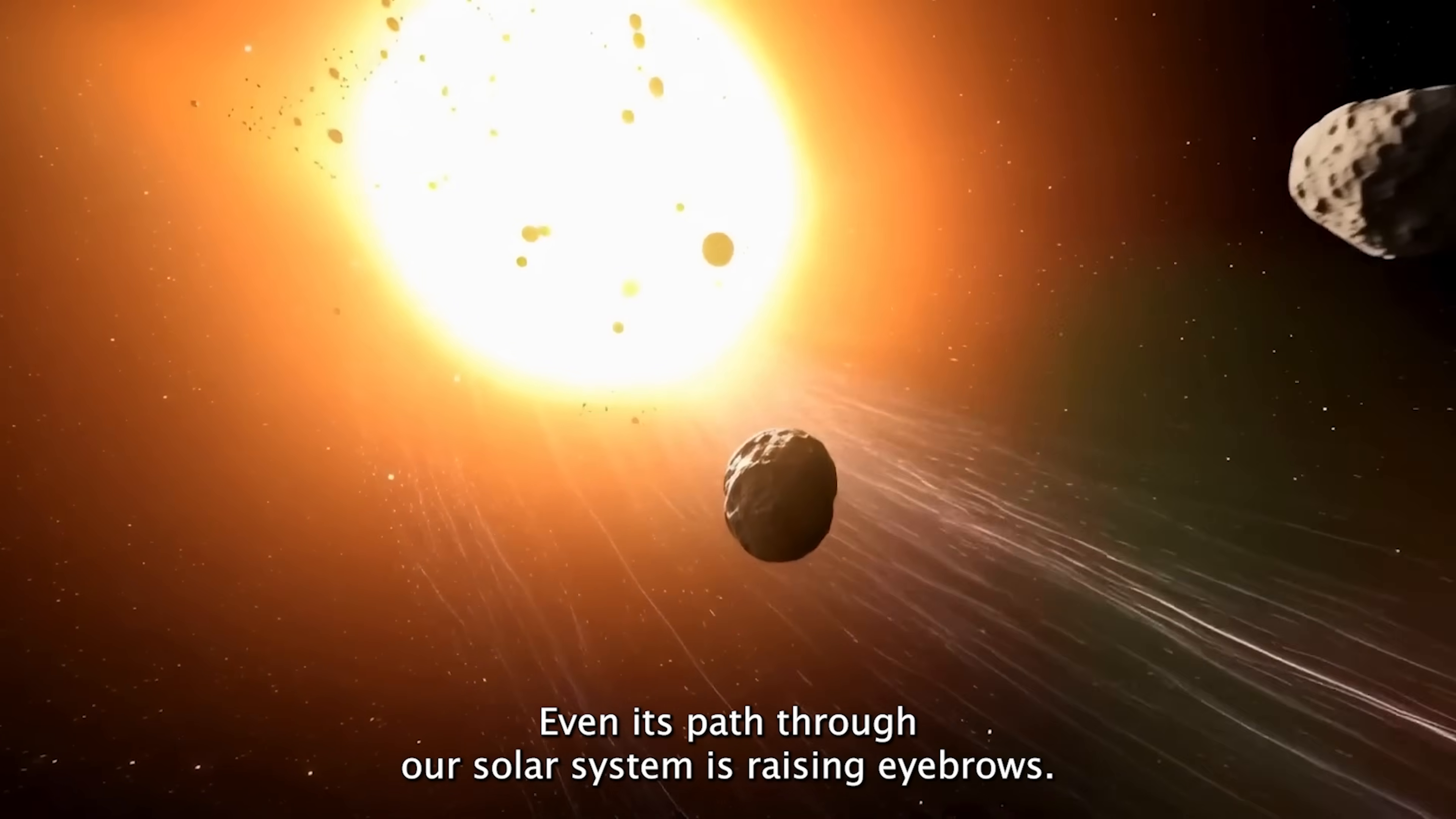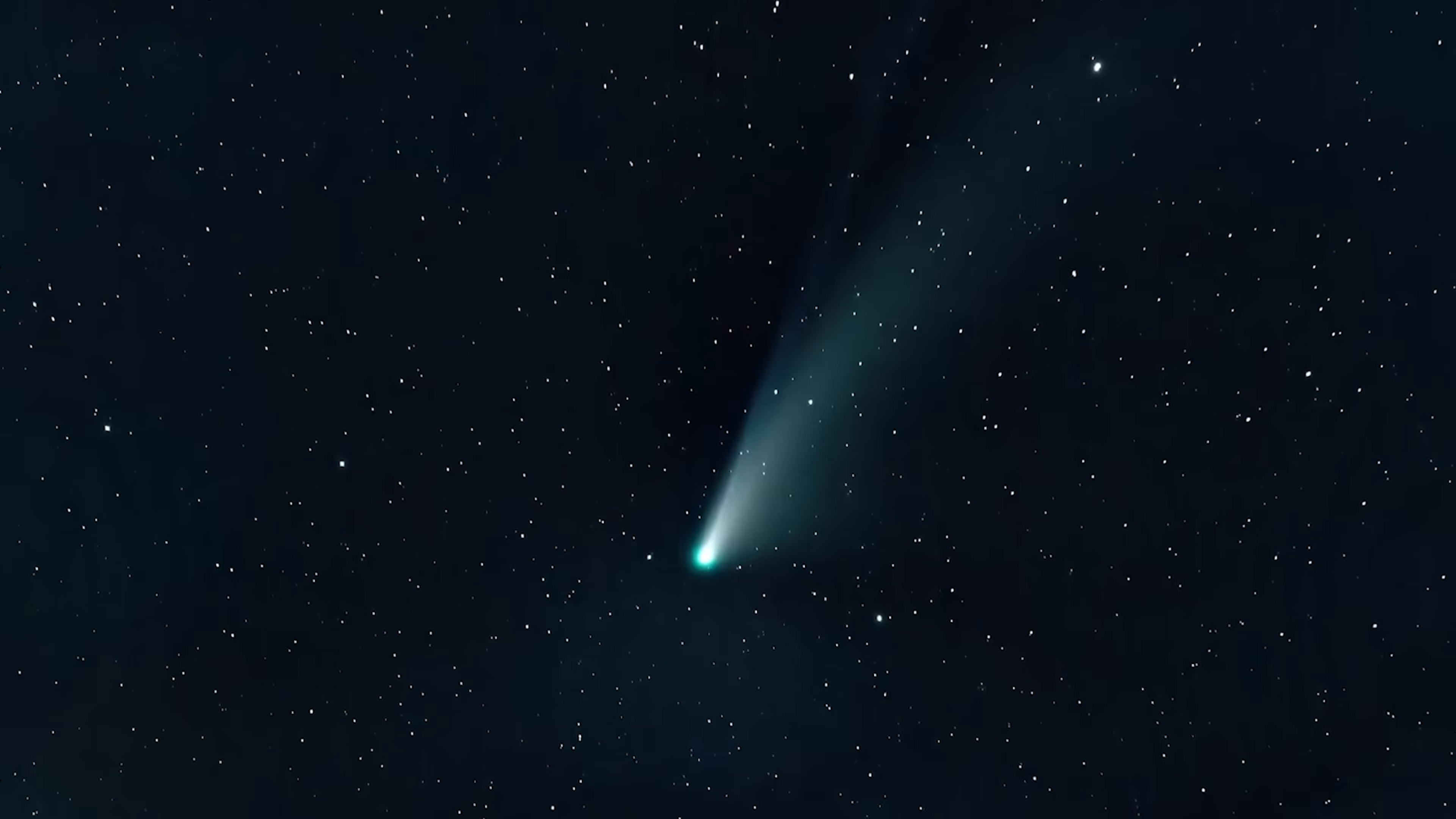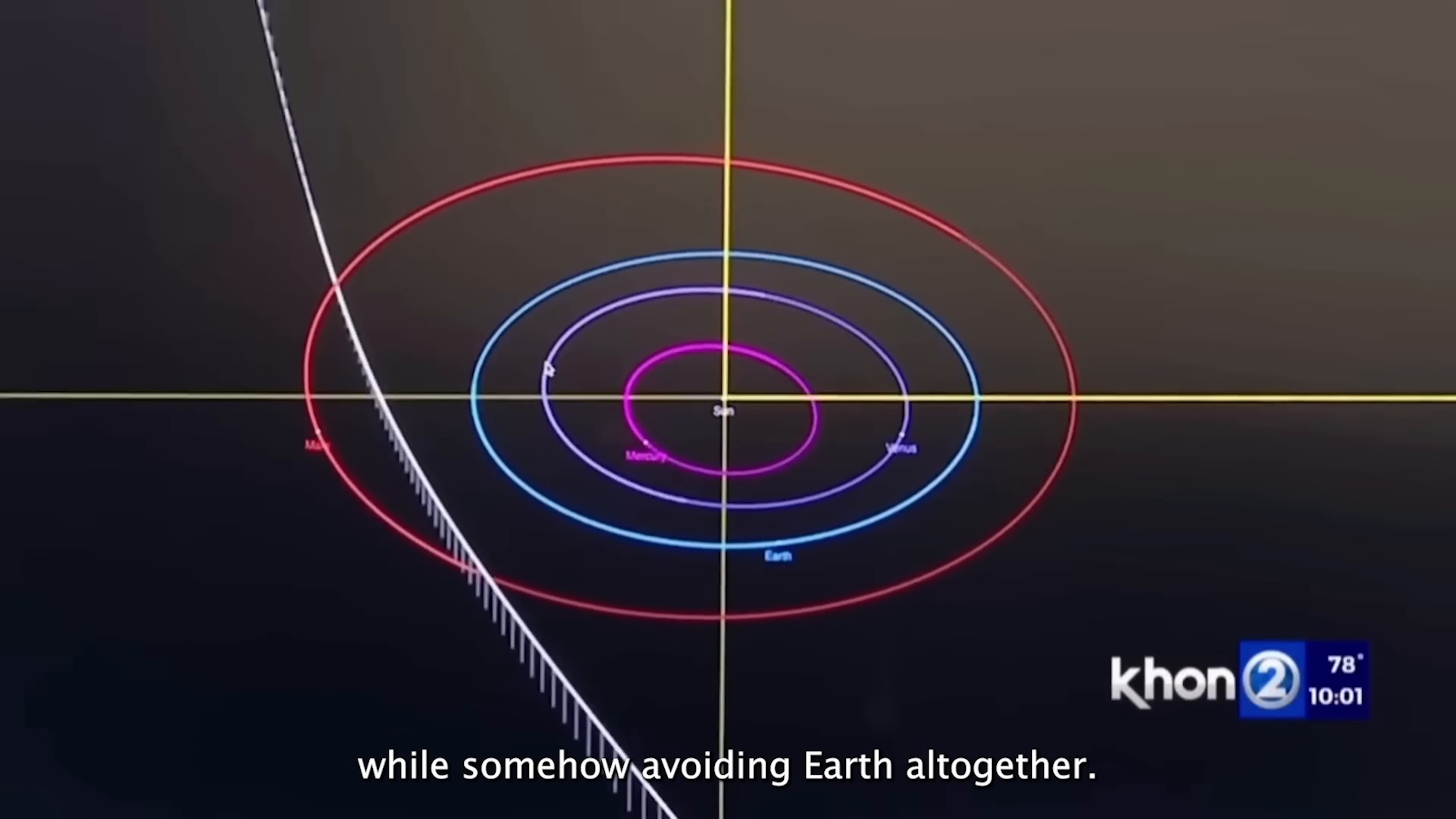Even its path through our solar system is raising eyebrows. Unlike most interstellar objects, 3i Atlas is moving almost perfectly along the plane of our solar system. On its journey, it's passed unusually close to several planets while somehow avoiding Earth altogether, yet another clue that this is no ordinary cosmic visitor.